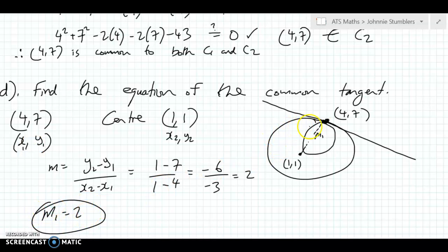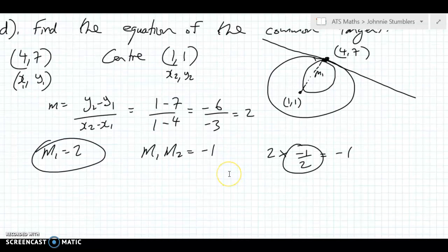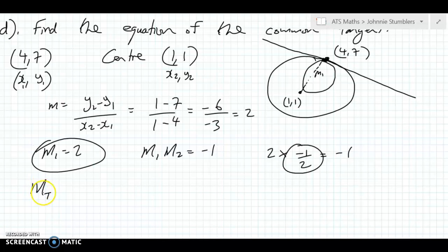And the slope of the tangent is going to be at right angles to this. So the condition for right angles is that m1 times m2 must equal minus 1. And 2 multiplied by minus 1 half will make it minus 1. So m2, the slope of the tangent is minus 1 half.